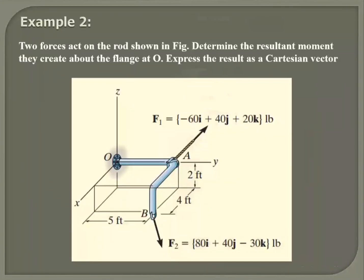Two forces acting on the rod shown in figure. Determine the resultant moment they create about the flange at O, express result as a Cartesian vector.